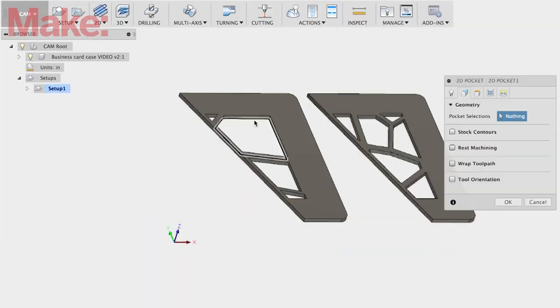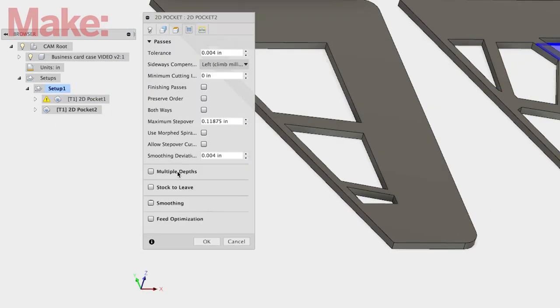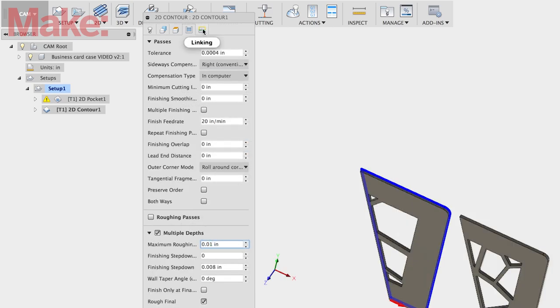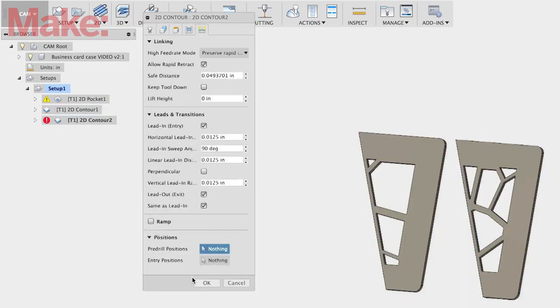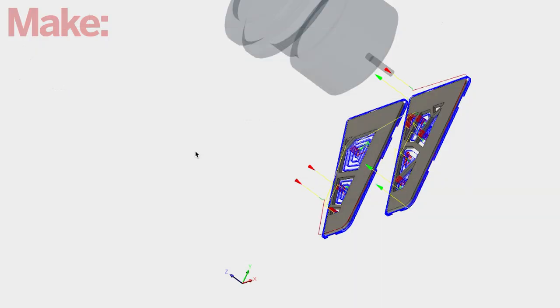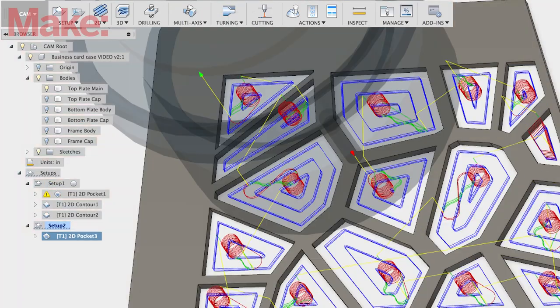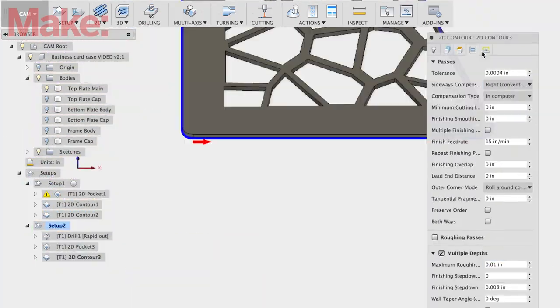All the CAM instructions for the CNC are also created in Fusion 360. I won't go into detail here—that really deserves its own video. The holes for the Voronoi pattern are all pocket cuts and the outlines are contour cuts. Pretty simple 2D operations really.